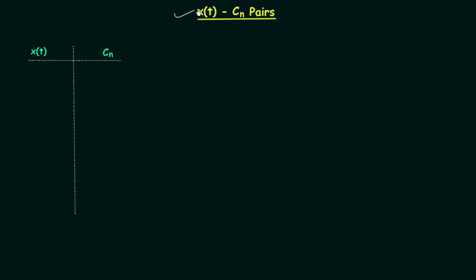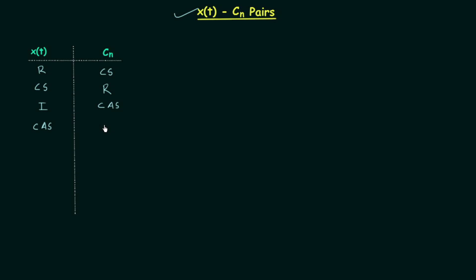In this presentation I will give you xt-cn pairs. These pairs are very useful while solving the objective questions which we will see in the coming presentations. From the introduction lecture about the complex exponential Fourier series, we saw that when xt is real, cn is conjugate symmetric, and when xt is conjugate symmetric, cn is real. Like when xt is imaginary, cn is conjugate anti-symmetric, and when xt is conjugate anti-symmetric, cn is imaginary.